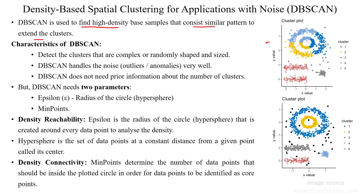For example, this dataset has high density samples — a large number of samples. The samples may have similar patterns, and based upon those patterns we can extend the number of clusters. Here we have cluster one, cluster two, cluster three, cluster four, and cluster five.